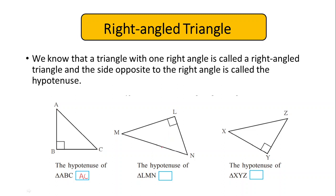In triangle LMN, angle L is 90 degrees. So the side opposite to angle L, that is ML, is going to be the hypotenuse.